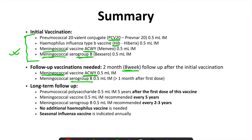In long-term follow-up, if the patient received PCV20, no further pneumococcal vaccine is required. If vaccinated with other forms such as PCV15, PCV13, or PPSV23, further doses of the polysaccharide vaccine will be required. The meningococcal ACWY vaccine needs to be repeated every 5 years. The meningococcal serogroup B vaccine can be repeated every 2 to 3 years, though it is not always recommended and is used in certain cases only. No additional dose of Haemophilus influenzae type B vaccine is recommended. The seasonal influenza vaccine is indicated annually.